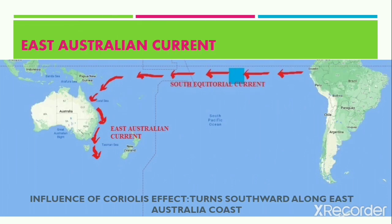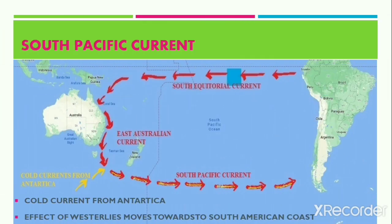On reaching the east coast, the South Equatorial Current, as a result of the Coriolis force as well as due to the shape of the coastline, flows along the eastern coast of Australia. This is termed the East Australian Current. While it reaches the south of Australia, there is another cold current that comes from the polar areas or Antarctica. This merges with the East Australian Current, creating fog and mist as a result of the mixing of the warm and cold waters.